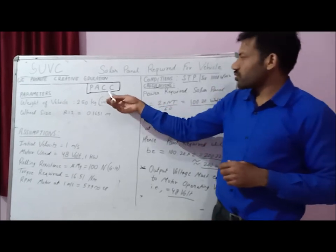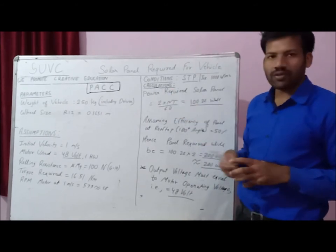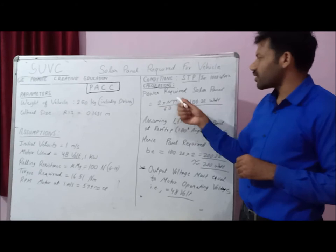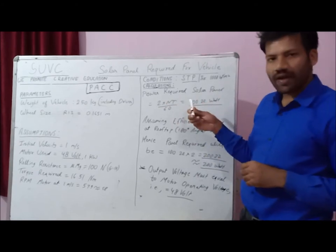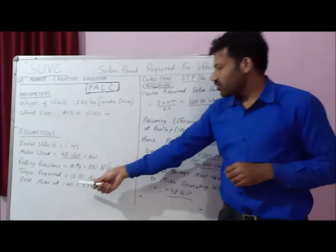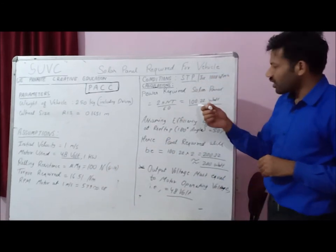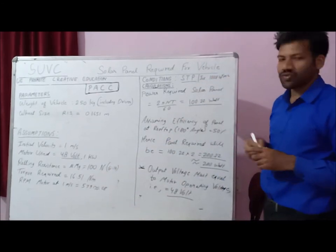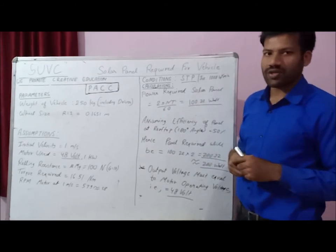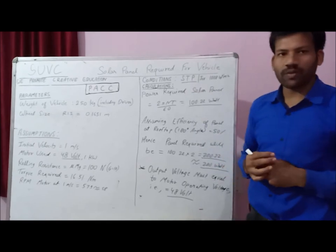Now the last and most important step: Calculations. You need the simple formula 2πNT/60. Putting in the RPM of 58 and the torque of 16.51 newton-meters, you get 100.32 watts — this is the power required to run your vehicle directly on the solar endurance round. This power should be provided by the solar panels.